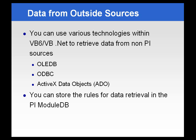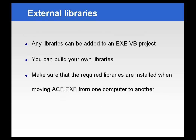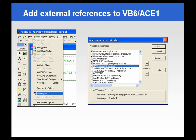You can use data from outside sources in ACE — you're not limited to just PI data, which is one of its powerful features. You simply have to use some sort of communication protocol, like OLE DB, ODBC, or ADO, to retrieve data from a foreign system. You can store the rules or queries for retrieval in the module database. If you're using any external functions, you simply have to add those as references to your project. You can build your own libraries, and please make sure that if you are developing on multiple machines, the required libraries are installed and migrated if you're moving your ACE executable from one machine to another. This is simply a screenshot of adding a reference to an ACE or Visual Basic project.